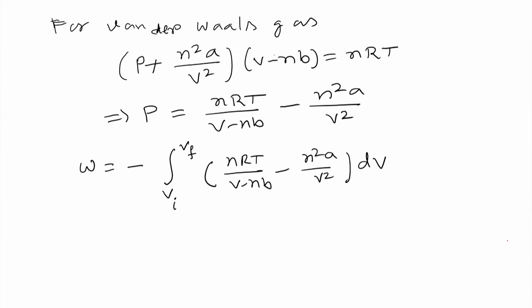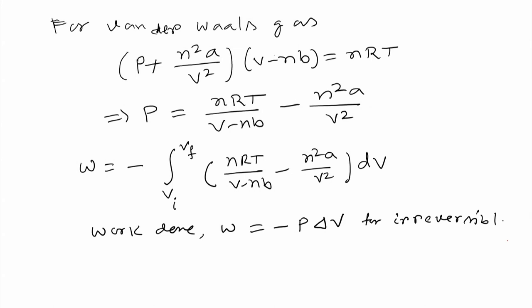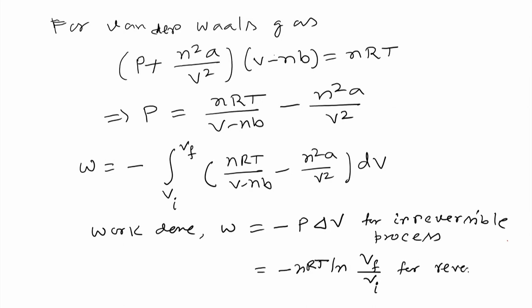So, to summarize what we have so far: work done W = −P_external × ΔV for an irreversible process, and W = −NRT ln(V_f/V_i) for a reversible process with an ideal gas.